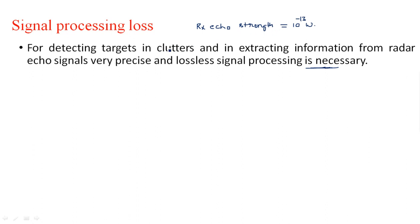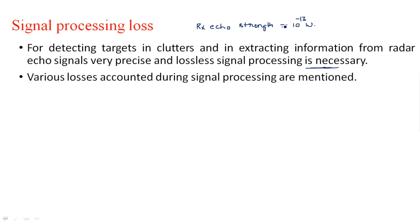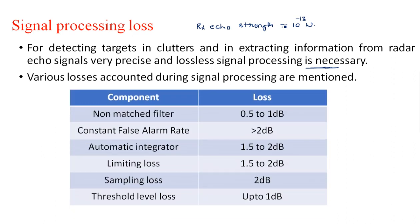Among the number of clutters — which are stationary objects — we need moving target information, which can be identified by using a clear and efficient receiver. The various losses accounted during signal processing are listed here. One component is the non-matched filter. The matched filter is nothing but the IF amplifier, and if that is not perfectly matched, it results in a non-matched filter.